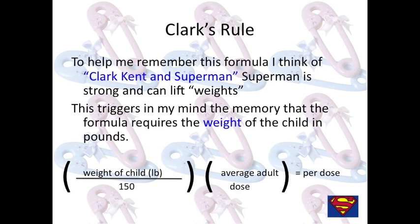Clark's Rule. To help remember this formula, think of Clark Kent and Superman. Superman is strong and can lift weights — this triggers the memory that the formula requires the weight of the child in pounds. The formula is: weight of the child divided by 150, times the average adult dose. This gives you the per dose.